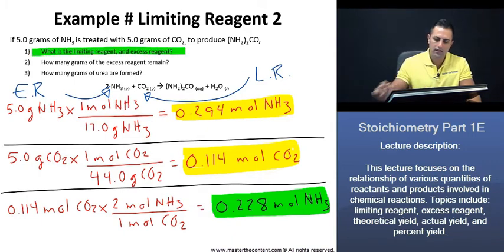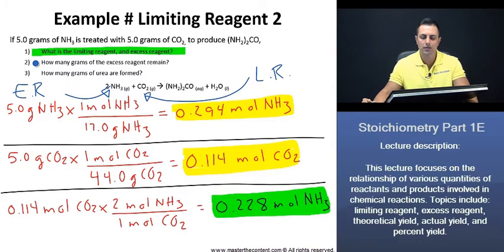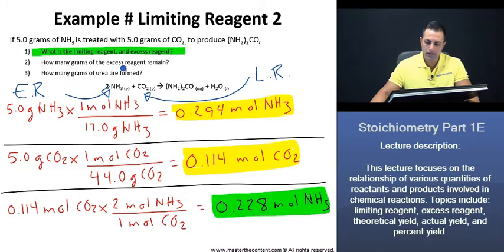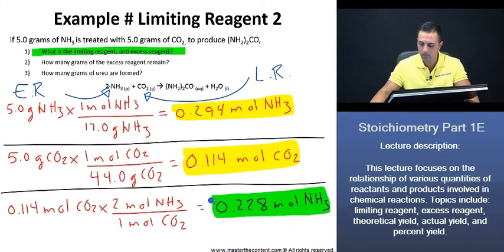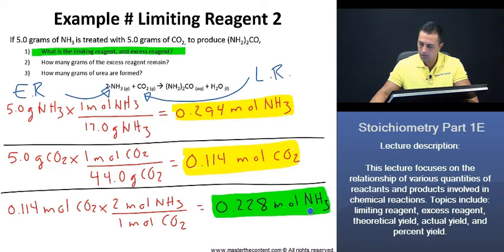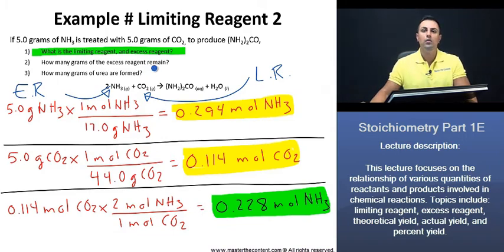Now that we're done with number one, let's continue with number two: how many grams of the excess reagent remain? To find the amount of grams of the excess reagent — which is ammonia — remaining, we can take the amount of moles of ammonia being consumed, use its molar mass to convert to grams, then subtract that from the initial amount of 5 grams, and we'll know the amount of grams of the excess reagent that remain.